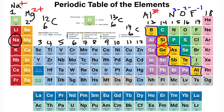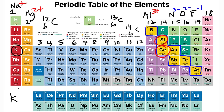Magnesium is found in seawater. Calcium is found in your bones. Potassium in its ionic form, K⁺, is found in bananas — bananas are high in potassium.